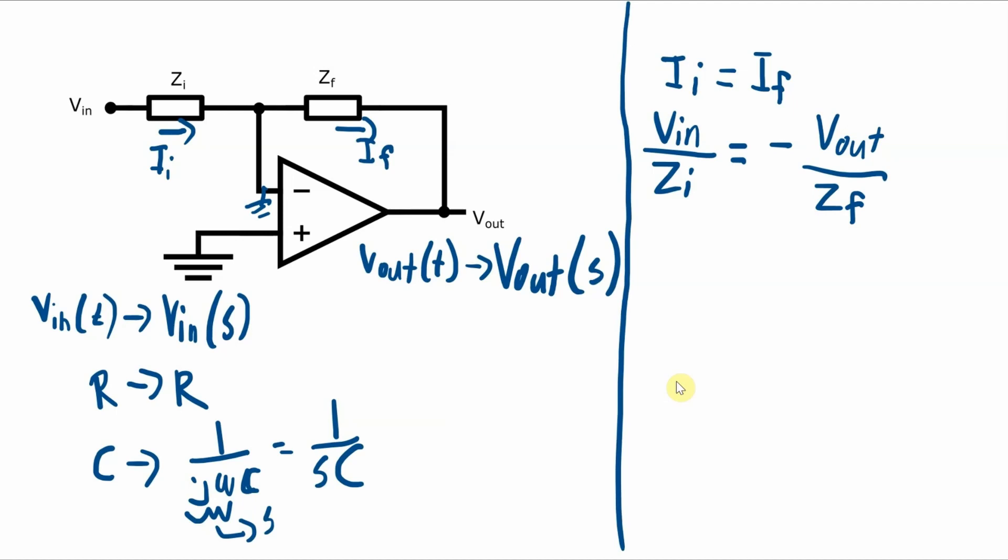So rearranging this, doing a little bit of algebra to get an equation in terms of Vout, we get Vout is equal to negative zf over zi times Vin. And this is just the generic form where we have some impedance at the input and some impedance in the feedback.